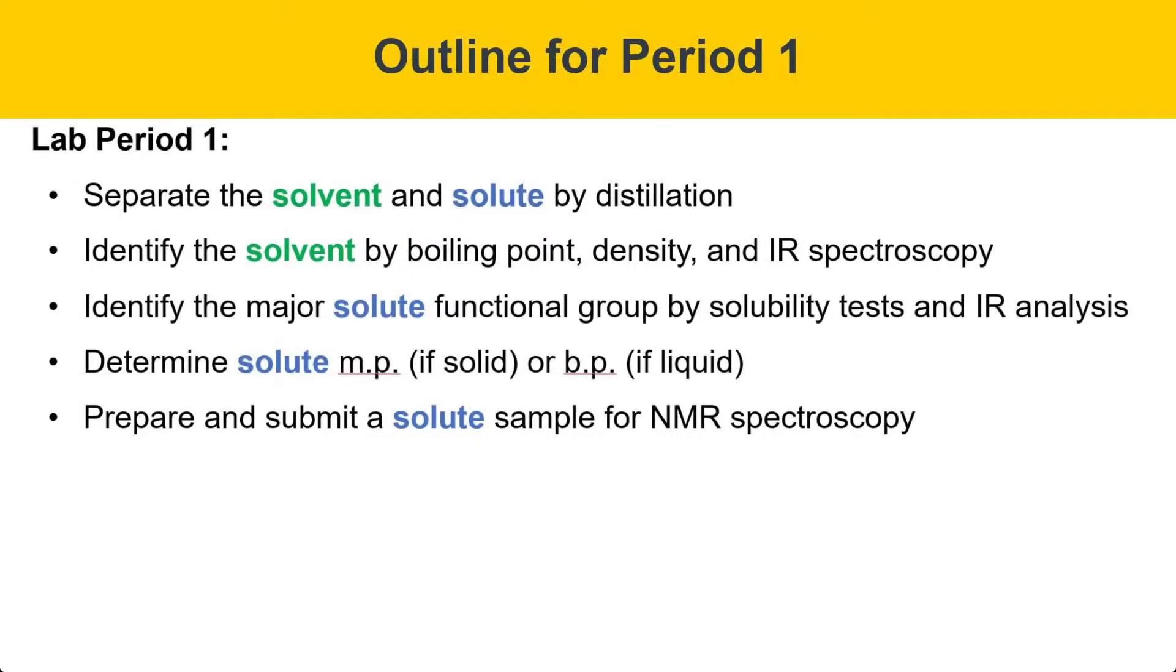Here's an outline of the activities for the first period of this two-part lab experiment. In the previous video, I covered bullet points 1 and 2. Next, I'll shift gears to start identifying the major solute functional group by testing its solubility in various aqueous solvents and also doing IR analysis of the solute. Then I'll also determine the unknown solute's boiling point and prepare and submit a solute sample for NMR spectroscopy. You could do these last steps in whatever order is convenient.